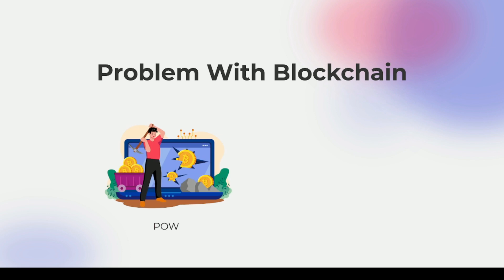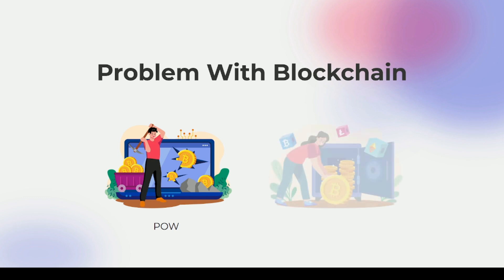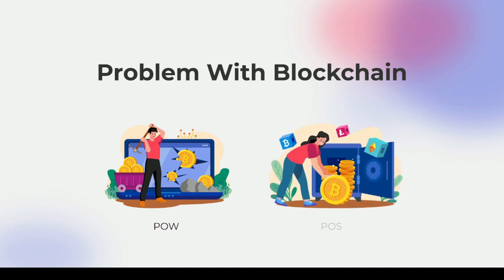If we talk about Bitcoin blockchain, it uses proof of work. The problem with proof of work is that it consumes a huge amount of energy, which actually harms our environment.